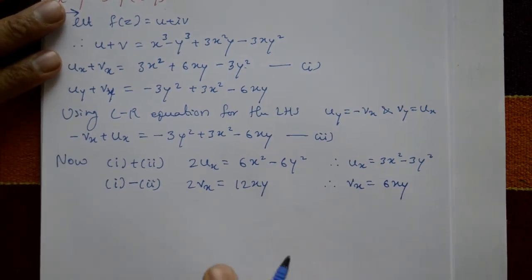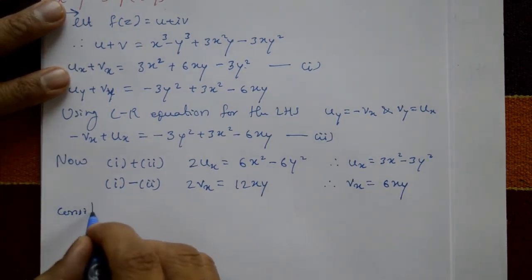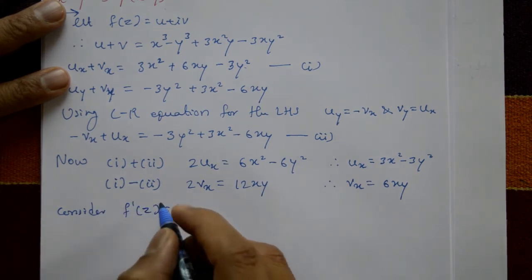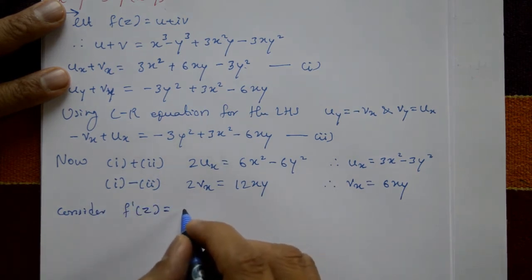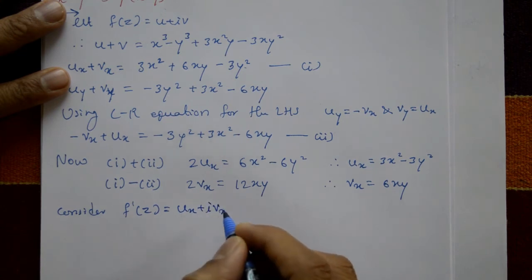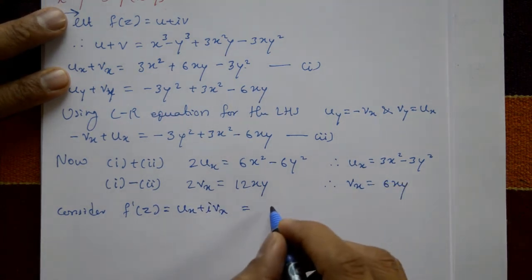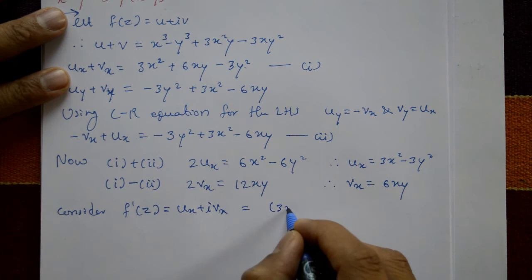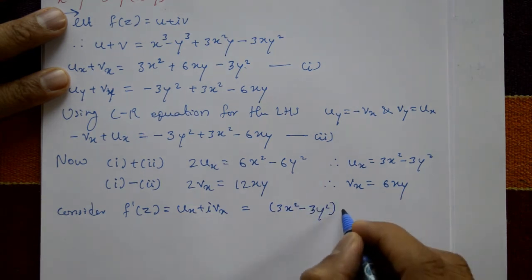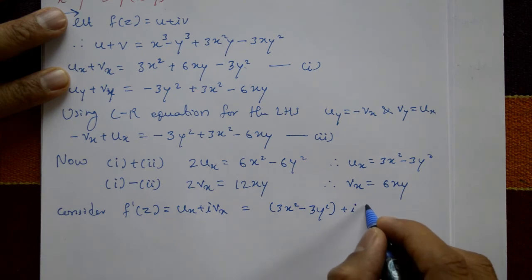Now consider f'(z) = ux + i·vx. Substituting, f'(z) = (3x² - 3y²) + i(6xy).